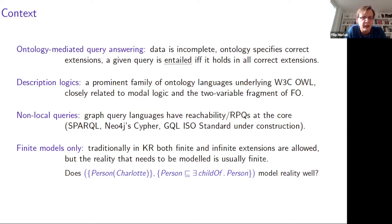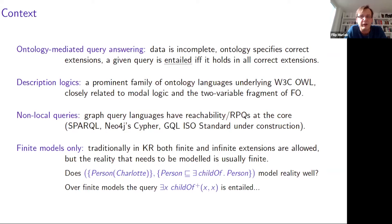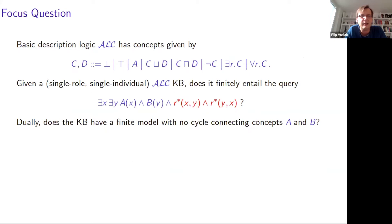Consider this knowledge base at the bottom of the slide. It just says that Charlotte is a person and that every person is a child of a person. At first sight it might seem fine — it seems to reflect our knowledge about the world. But when you factor in the fact that the number of people who ever lived is finite, you discover that we cannot avoid cyclic genealogy, which is probably not what we would want. So the query expressing a cycle is entailed by our knowledge base. This is precisely the kind of reasoning we will be doing in this paper.